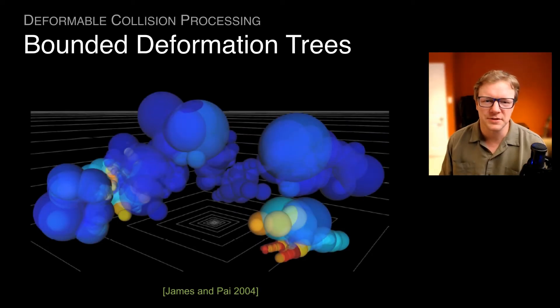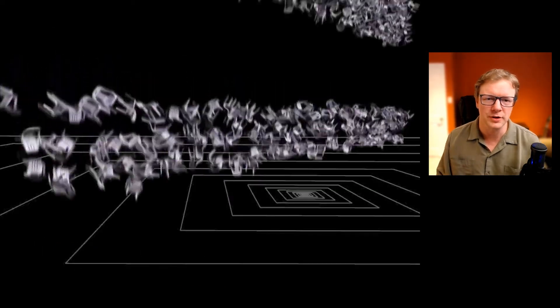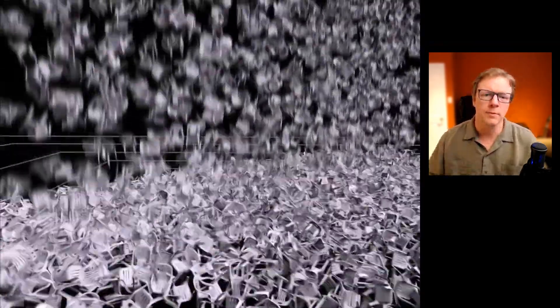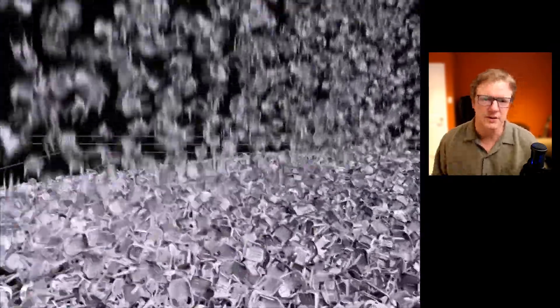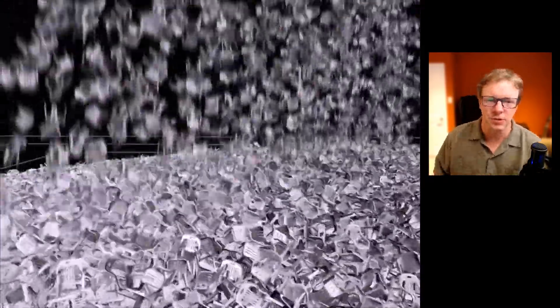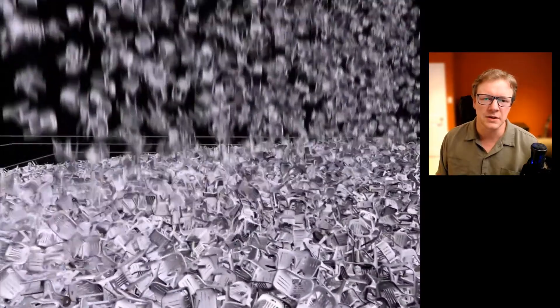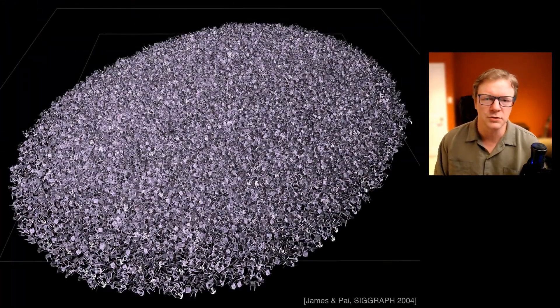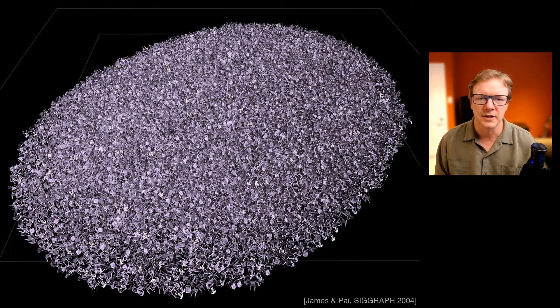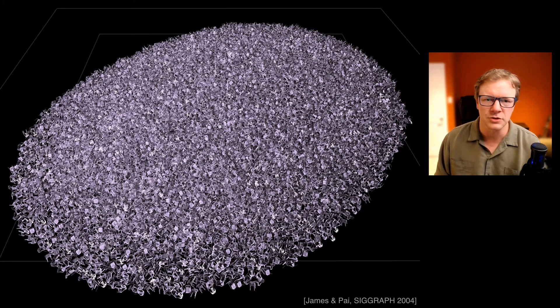Bounded deformation trees were the breakthrough that allowed us to simply bound the deformed geometry without having to actually deform all the triangles and update a hierarchy on them in order to do collision detection and find out nothing was touching. We could simply update the bounds using the parameters of the reduced coordinate models, and then use that to cull in an output sensitive way that didn't require us to deform the quarter billion triangles in this example here that were all deformed and lit on the GPU.